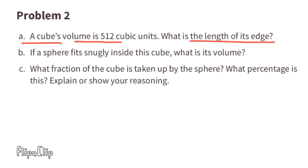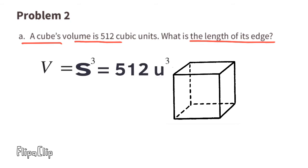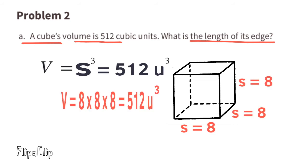Problem number 2A: a cube's volume is 512 cubic units. What is the length of its edge? To find the volume of a cube, you multiply the side length by itself 3 times. So what number times itself 3 times equals 512? Since 8 times 8 times 8 equals 512, the side length is 8 units.